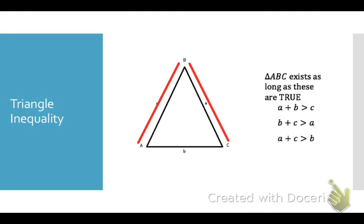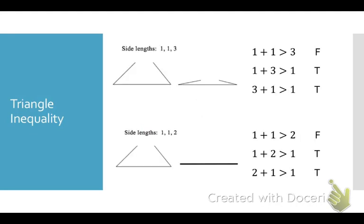Now this sounds kind of silly, but look at these examples. Say I have a triangle with side lengths of 1, 1, and 3. If I push those two sides so that they will touch, they're not long enough to touch, because 1 plus 1 is greater than 3 is false. So those sides would never ever touch.